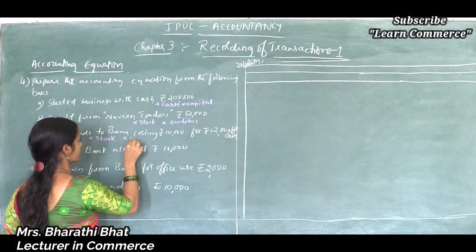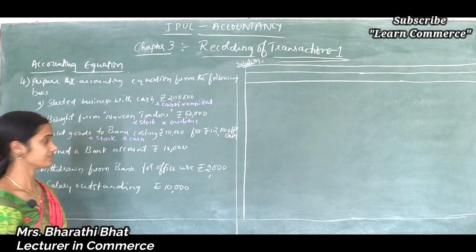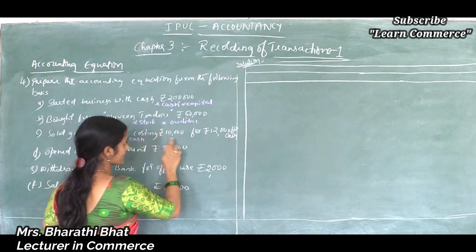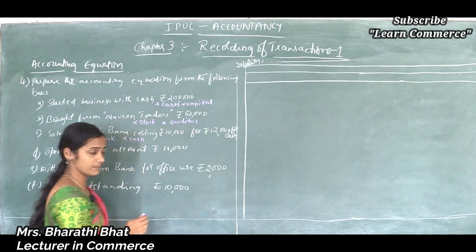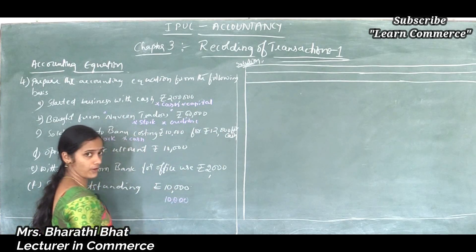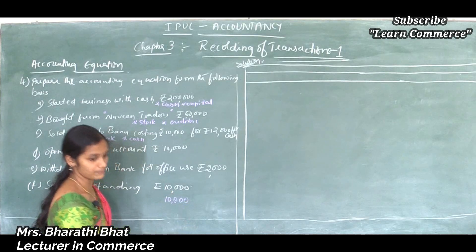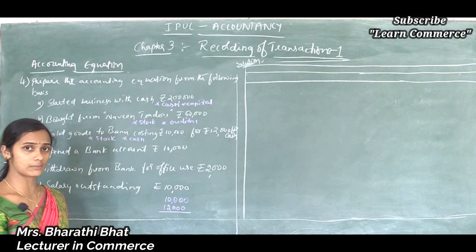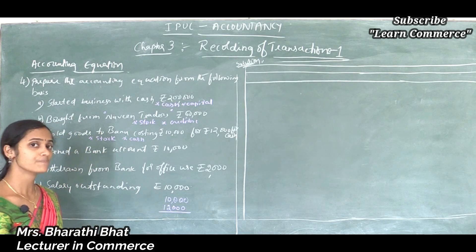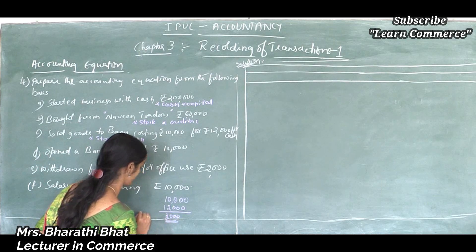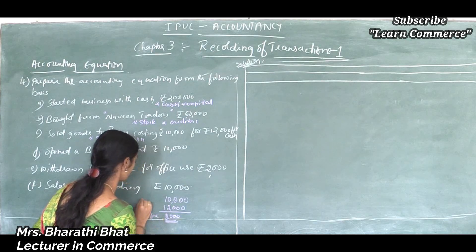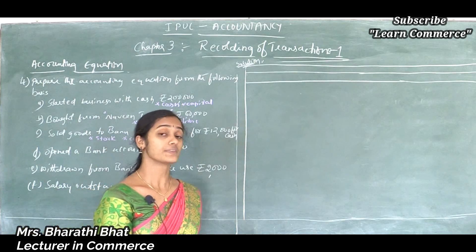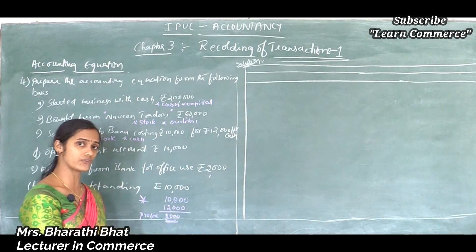Costing rupees 10,000 sold for cash means cash is also affected. Now, a 10,000 rupee product was sold at 12,000. So 12,000 minus 10,000 — the remaining 2,000 is considered as profit. Profit or loss affects the capital account: profit positively affects capital and loss negatively affects capital. So here 2,000 is profit and capital shows increased value.